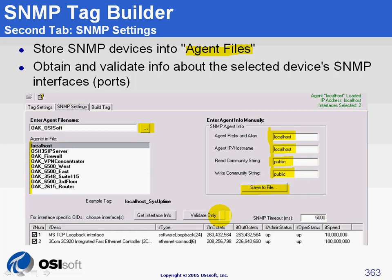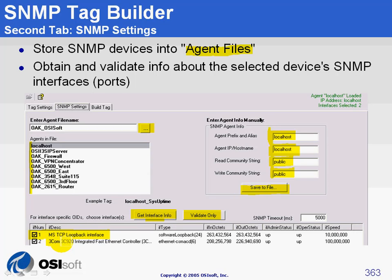The first thing you should do is either validate the communication with the device or get interface info. By interface here, we mean a network interface — a physical or logical port. As you can see, when I clicked 'get interface info' on my local host, I got two interfaces: one is my Microsoft TCP loopback interface, a software interface automatically built into Windows machines, and I also got my 3Com network interface. In summary, the second tab is simply where you tell the plugin what device to communicate with.